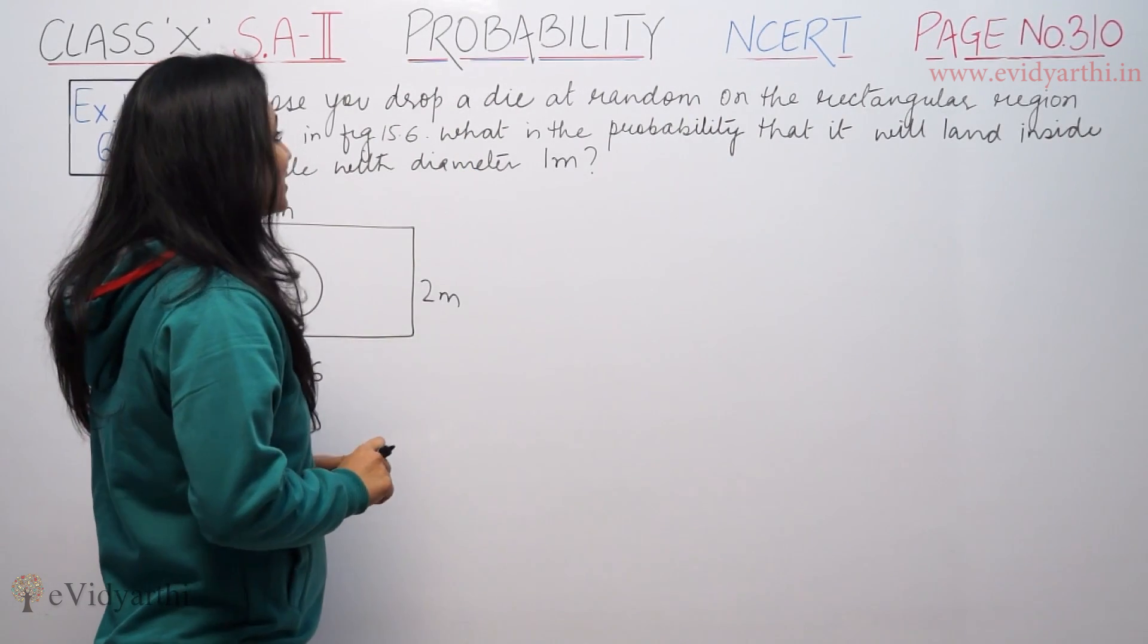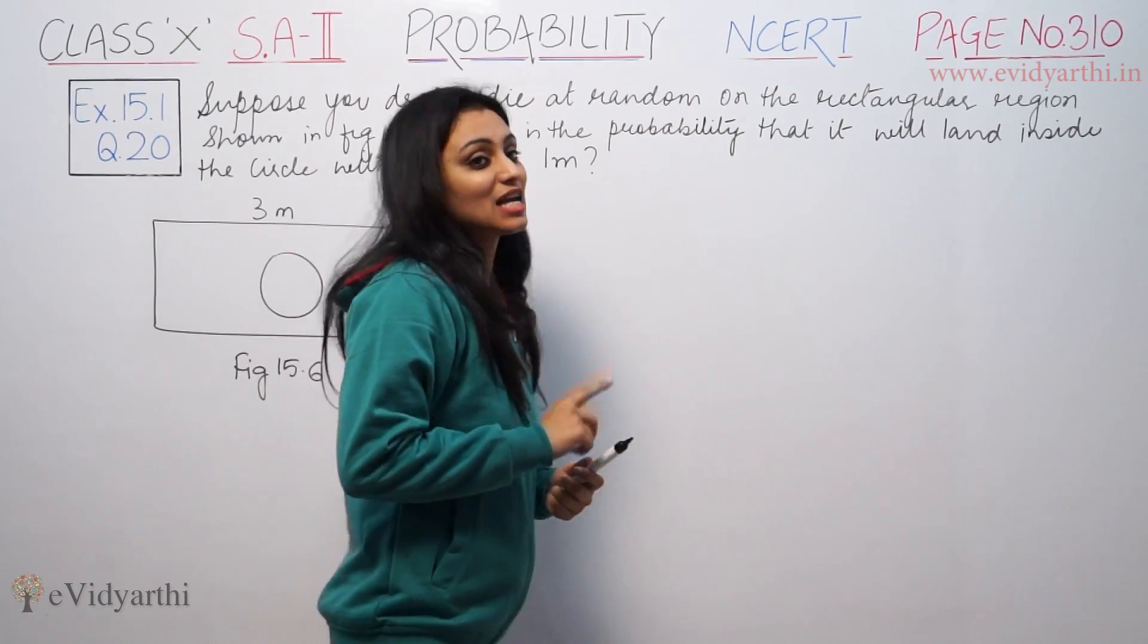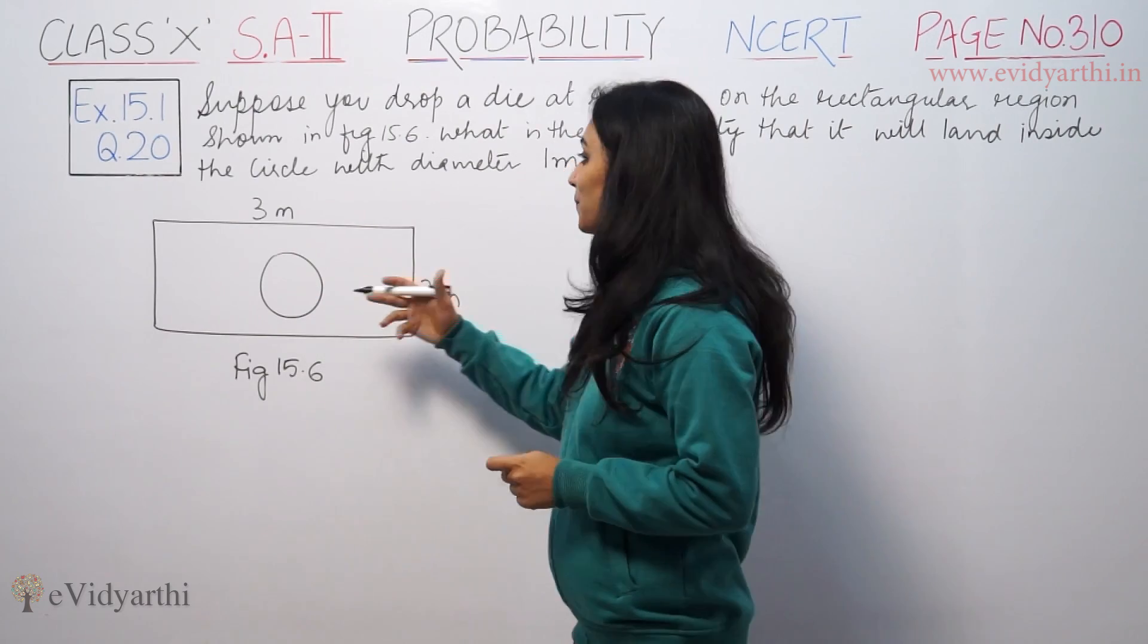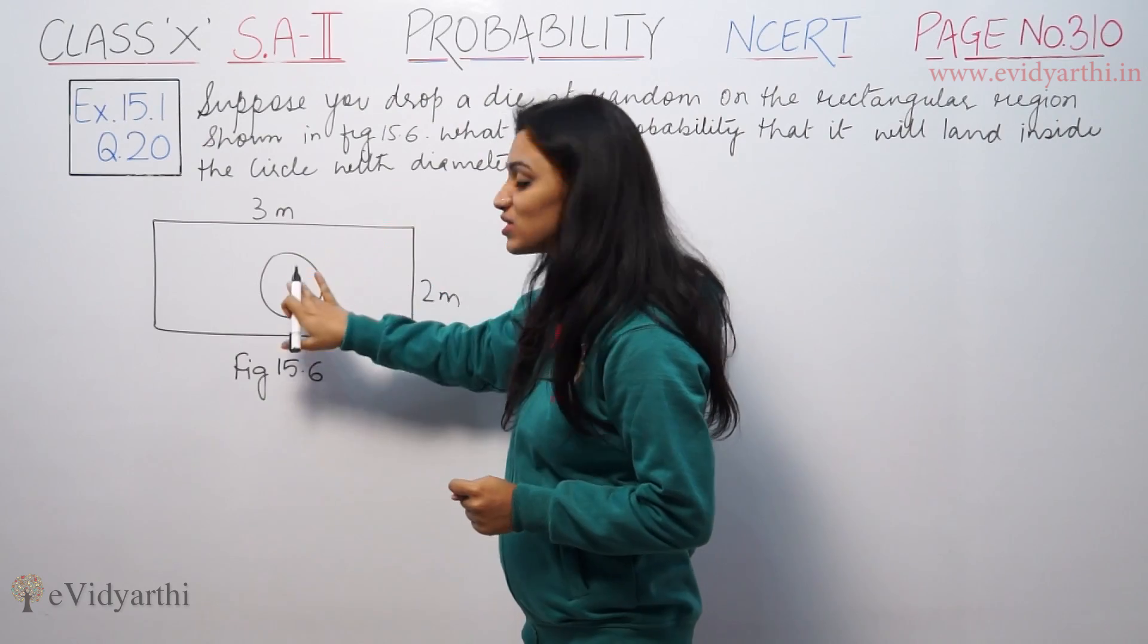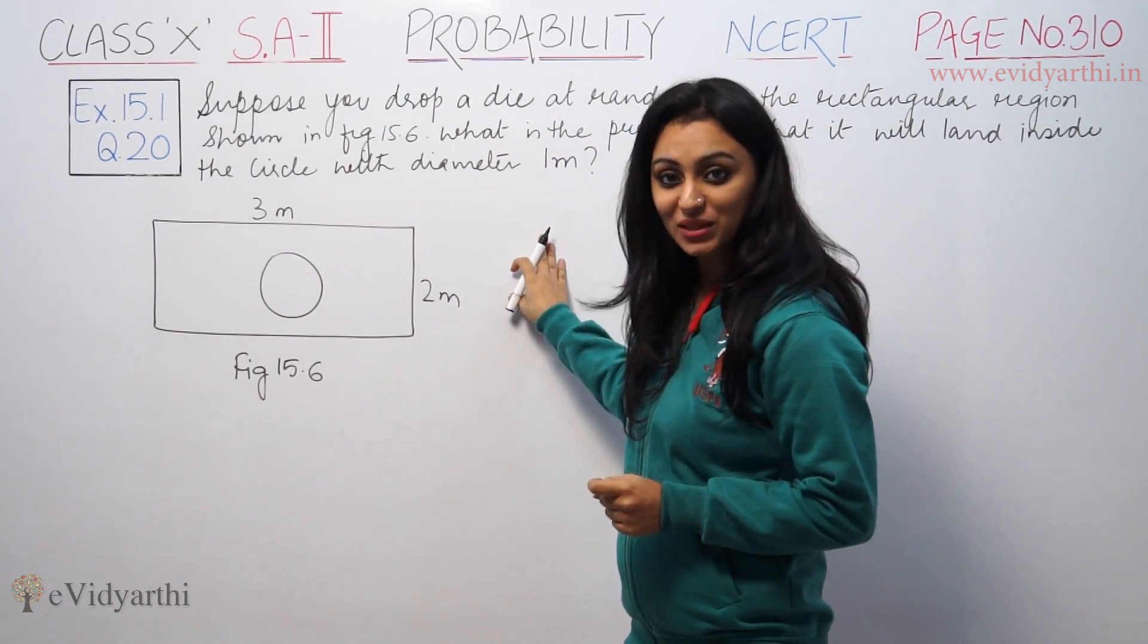The question says, suppose you drop a dart at random on the rectangular region shown in the figure. In this figure, you have a rectangular region with a circle inside. What is the probability that it will land inside the circle? The circle has a diameter of 1 meter.